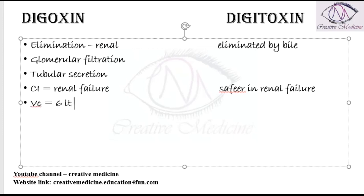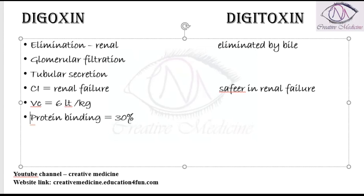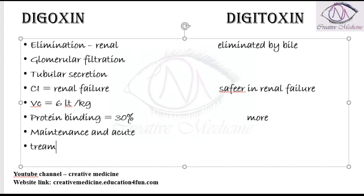The volume of distribution of digoxin is around 6 liters per kg. The protein binding of digoxin is around 30 percent, whereas digitoxin is more protein bound when compared to digoxin.